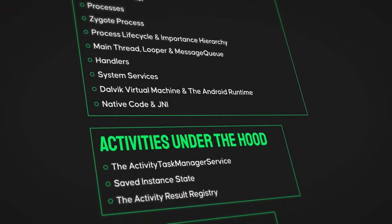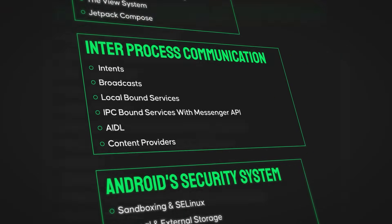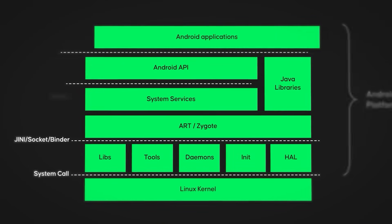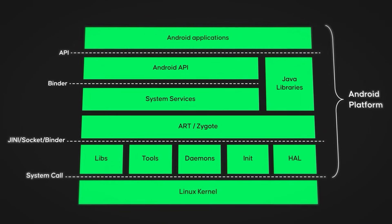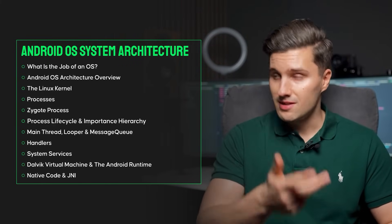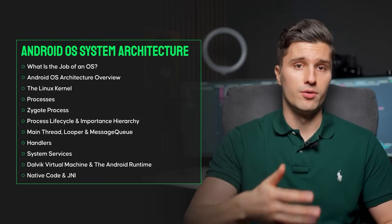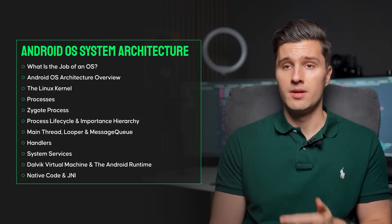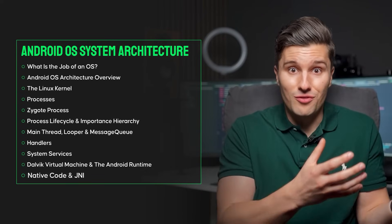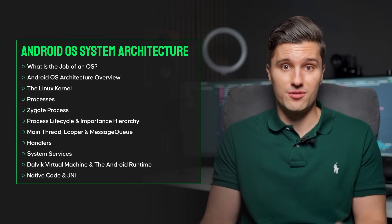So what does it teach you specifically? This course consists of 46 video lessons in nine distinct sections. First, you'll learn how the Android OS system architecture is actually structured. As you may know, Android is built on top of Linux, so you'll understand what that actually means and what makes Android unique. This section covers concepts like processes, the Zygote process, lifecycle importance hierarchy, main thread, Loopers, Handlers, Android's message queue mechanism, system services, the Dalvik virtual machine, Android Runtime, JIT and AOT compilation, native code integration, and how the JNI works.